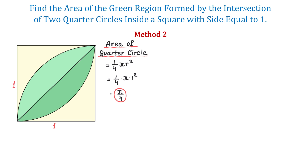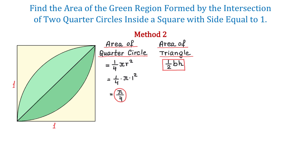Next, we will find the area of this triangle. We will use the formula for the area of a triangle: 1/2 times base times height. In this triangle, the base is 1 and the height is 1, so 1/2 times 1 times 1 equals 1/2.